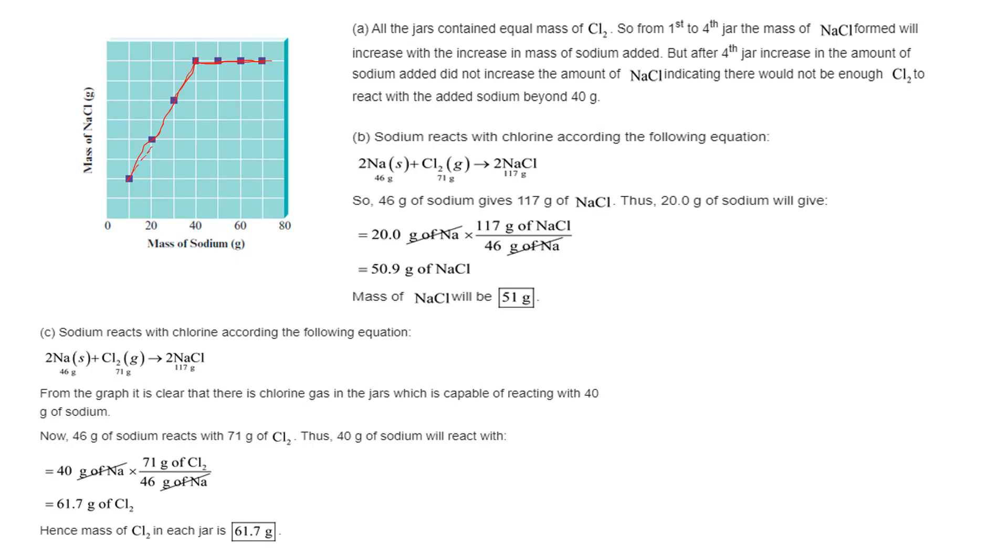For the second part, we can get the molecular weight of all the elements. Sodium is 23 and we have double so that becomes 46. Chlorine is 35.5 times 2 is 71. And of course this is sodium plus chlorine, that's 23 plus 35.5, and then that's 2 here so we have 2.